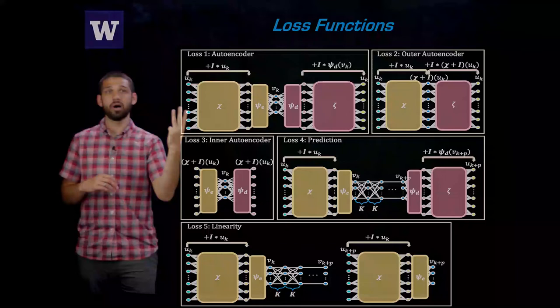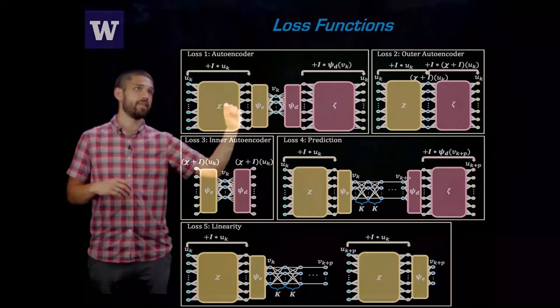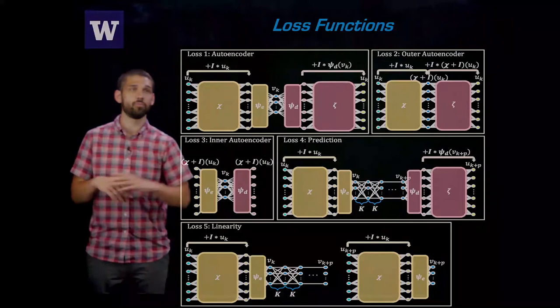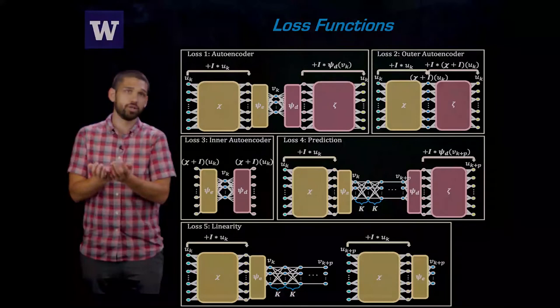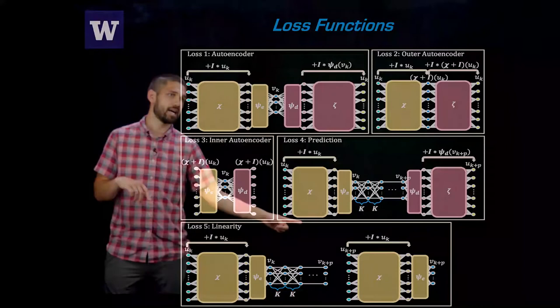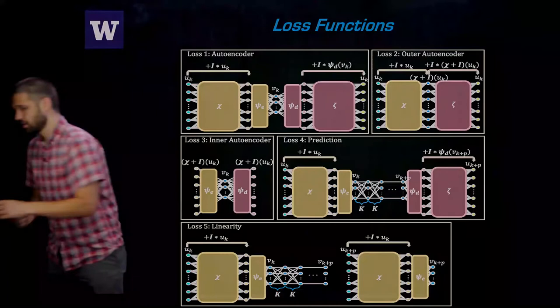So one more thing we need to handle is a loss function for training our network. Our loss function is actually the sum of five different loss functions. We have three unsupervised loss functions: an autoencoder loss function, and then we also want our outer encoder and decoder to form an autoencoder, as well as the inner ones. We also have a prediction loss function, which is supervised, where basically our network prediction should match up with the true solutions of the PDE. And then we have our last loss function we call the linearity loss function, where if you take some solution and feed it through the encoder and then march forward in time, that should be the same as if you take a solution later in time and just feed it through the encoder.